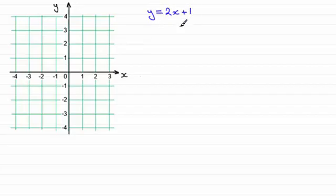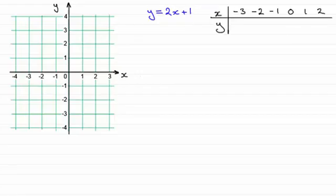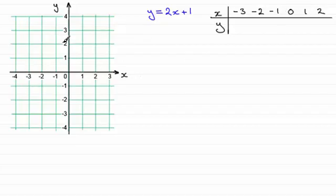And if we wanted to plot this graph, what we do is we form a table of values, something like this, where x in this example goes from minus 3 in steps of 1 unit all the way up to 2. You can pick any range that you like. I'm just going to try and fit it on this piece of graph paper here, which goes from x equaling minus 4 to 3. So if we're to work out what the corresponding y value would be for each value of these x's, then all we need to do is substitute each one into this equation.